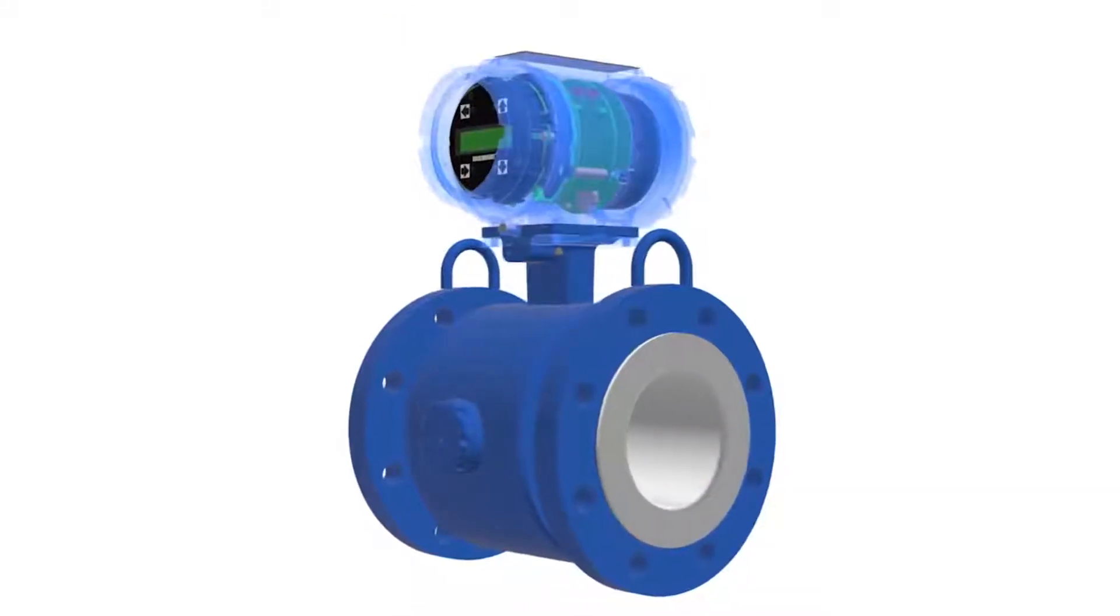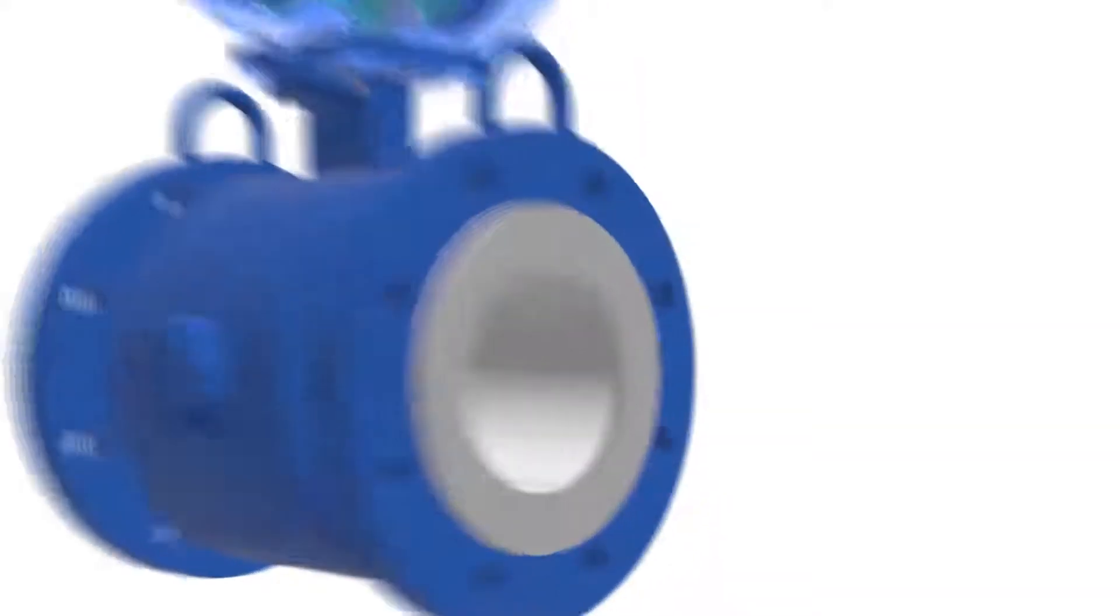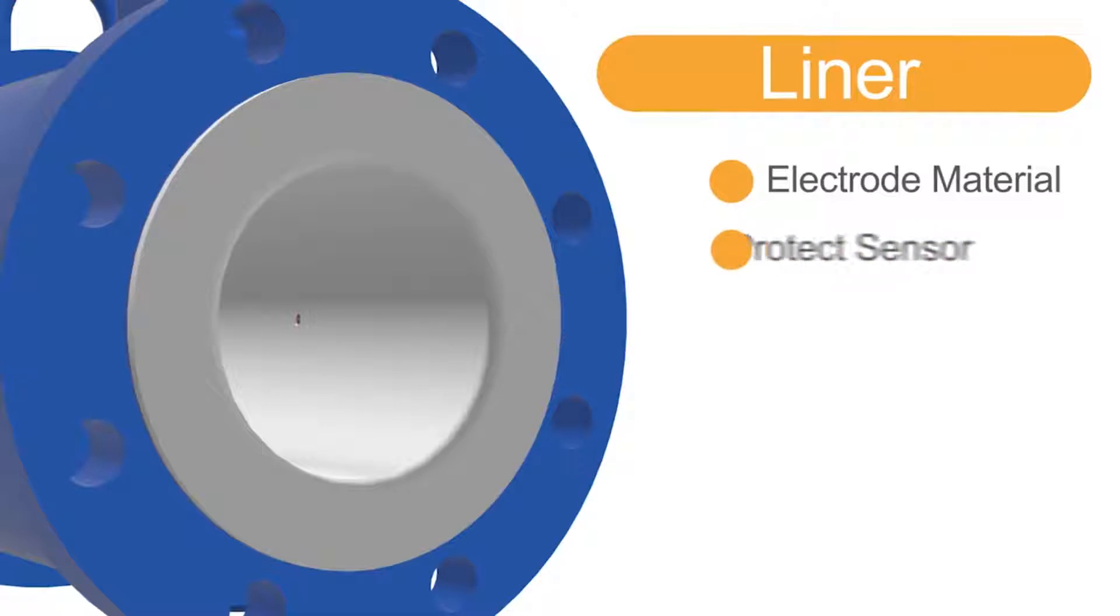To prevent electrical shorts of the sensing component circuitry, the pipe of the flow meter is lined with a special material known as a liner. This liner, along with a selection of the proper electrode materials, is important to protect the sensor against abrasive and corrosive chemicals and solids.